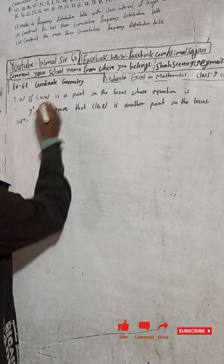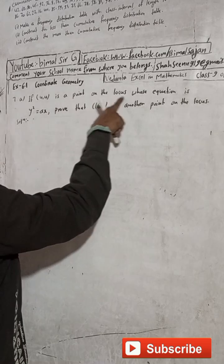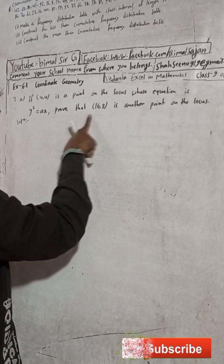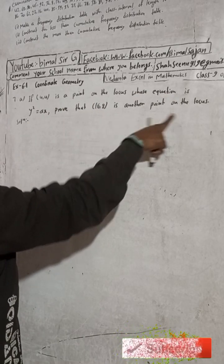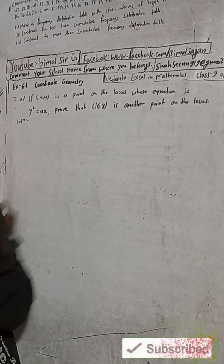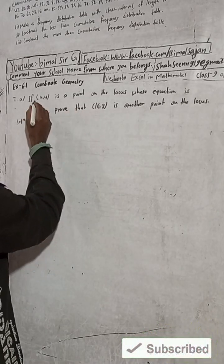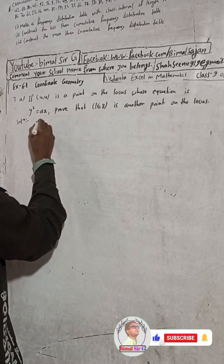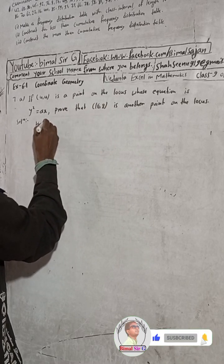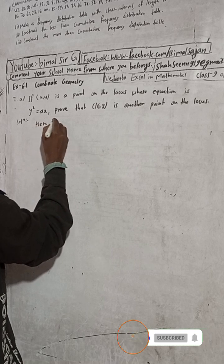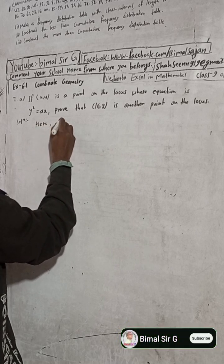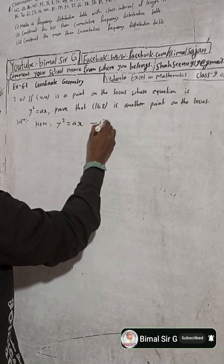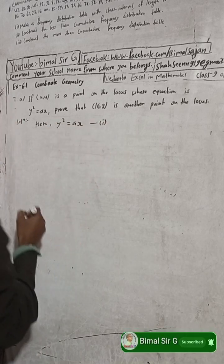Here it is given: if (4, 4) is a point on the locus whose equation is y² = ax, and (16, 8) is another point on the locus. So the given equation is y² = ax. This is equation 1.